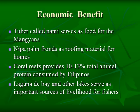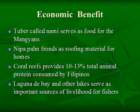Some Mangyan people use a tuber called Nami as food. Early people used nipa palm fronds as roofing material for homes. Around 10 to 13% of total animal protein is provided by coral reefs, and most of our bodies of water and ecosystems serve as important sources for livelihood, including Laguna de Bay and other lakes.